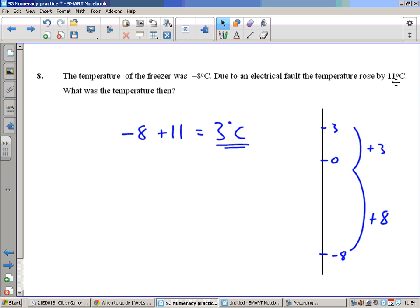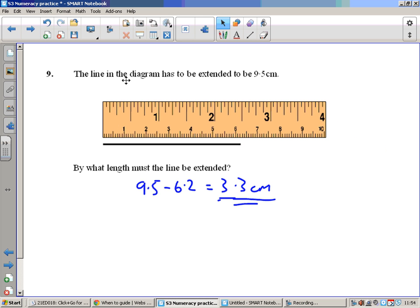It's negative 8 degrees Celsius, it gets 11 degrees Celsius warmer, so add 11 onto negative 8. So take 8 to get up to zero, still got another 3 to add on, so we'd end up at positive 3 degrees Celsius. The line in the diagram has to be extended to be 9.5 centimeters. At the moment it's 6.2. To find the missing part we can do 9.5 minus 6.2, or we could just count on from 6.2 to 7.2, 8.2, 9.2, then count up 9.3, 9.4, 9.5. That would also give 3.3 centimeters.